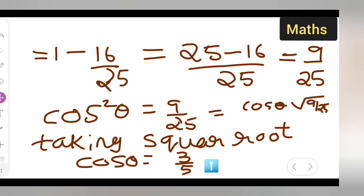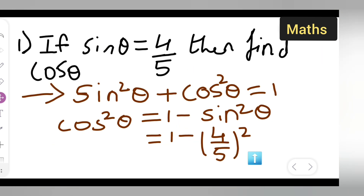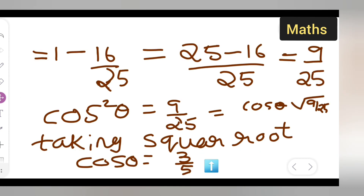The final answer is cos theta is equal to 3 upon 5. I hope you understood how to find the value of cos theta when sine theta is given. Thanks for watching — if you have any doubts, comment below. Don't forget to like, subscribe, share with your friends, and press the bell icon for more updates.